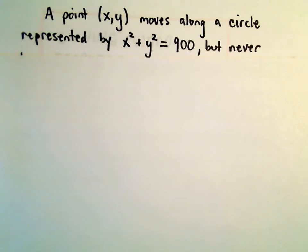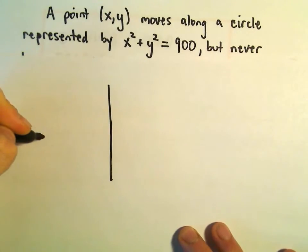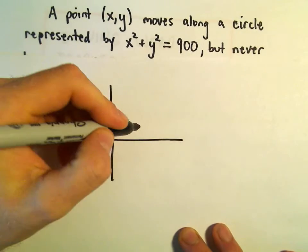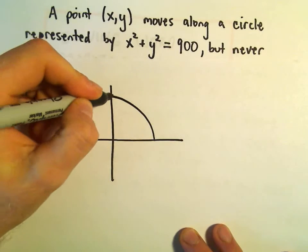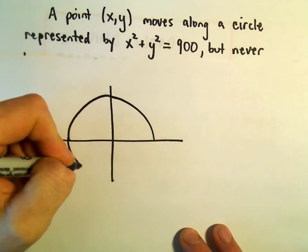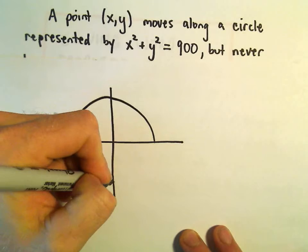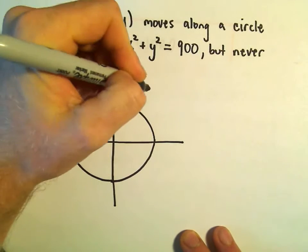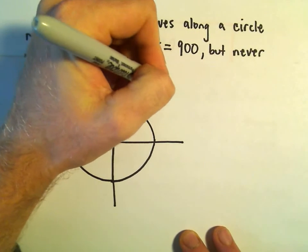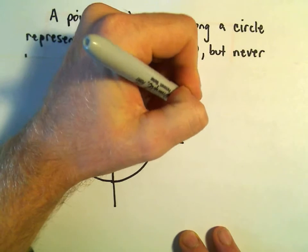So, again, it sounds a little worse, maybe, than what it is. So, suppose we've got a circle here. So, here's going to be my bad circle. Okay, so that's my circle with equation x squared plus y squared equals 900.